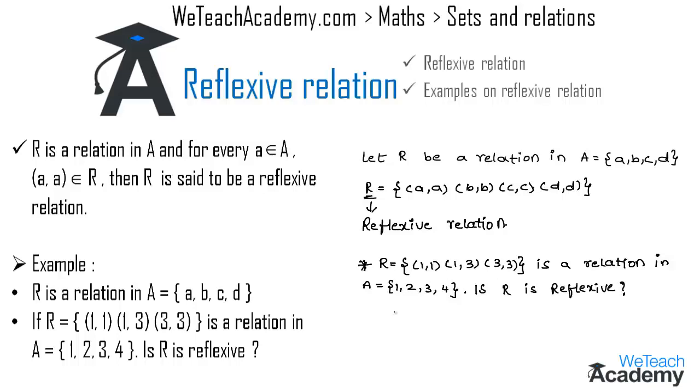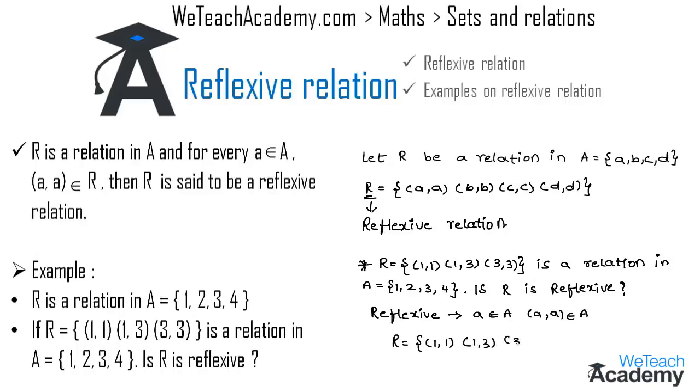If R is reflexive, then it must satisfy the condition: if a belongs to A, then (a,a) must belong to R. Here we have the ordered pairs R = {(1,1), (1,3), (3,3)}.